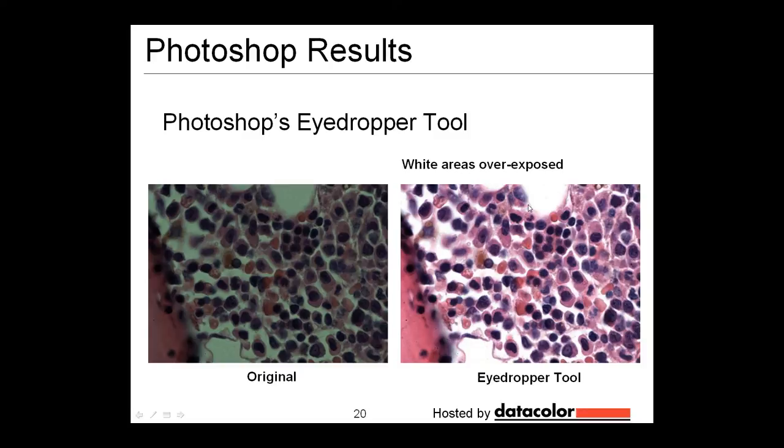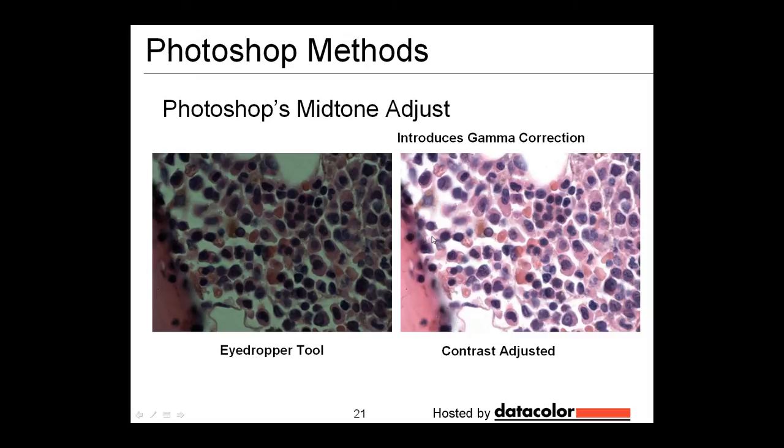It's real easy to overexpose using this tool. And what that means then is that your whites that are in your background of your images then just blend in with the background behind it. And so if this were printed, it would just blend in with the printed page. And you could also lose some very fine detail when you end up overexposing using the eyedropper tool. We could have also done a mid-tone adjustment. As I said, that also introduces a gamma correction, meaning that the image tones then become nonlinear.